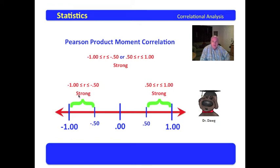So if a value has a Pearson product moment correlation coefficient falling between minus 1 and 0.5, or between 0.5 and 1, then that's considered a strong correlation. Some will put a 0.7 or negative 0.7 and call it a very strong correlation.